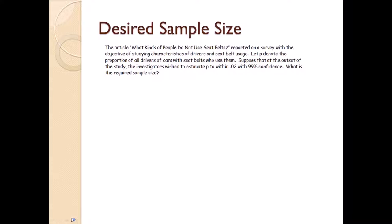So here's an example. The article 'What Kind of People Do Not Use Seat Belts' reported on a survey with the objective of studying characteristics of drivers and seat belt usage. Let p denote the proportion of all drivers of cars with seat belts who use them. Suppose at the onset of the study the investigators wish to estimate p to within ±0.02 with 99% confidence. So what's the required sample size?